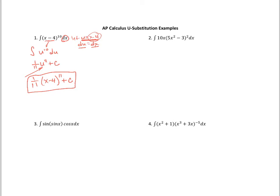For number 2, I see that 5x squared minus 3 is the most complex structure, so that's what I'll start with. We let u equal 5x squared minus 3. Taking the derivative of each side gives du equals 10x dx. We solve for dx: dx equals du over 10x.